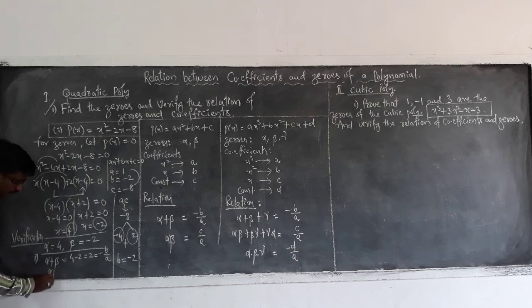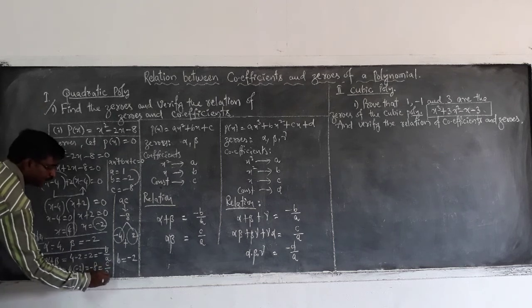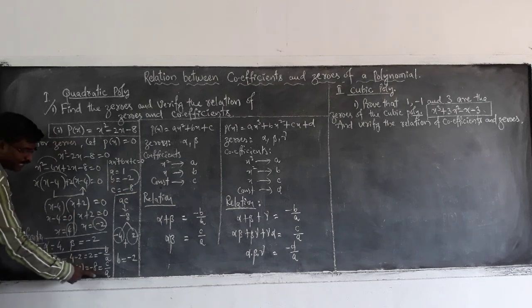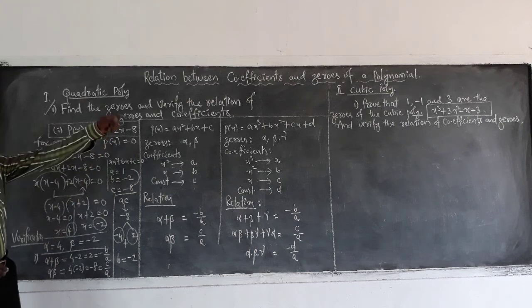And the second relation alpha into beta. That is 4 into minus 2. That is minus 8. Now observe this. Equal to c by a. Here c is minus 8. And a equal to 1. So this is the way to verify the relation. Now observe.